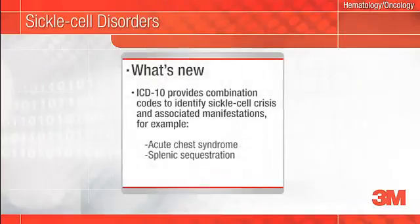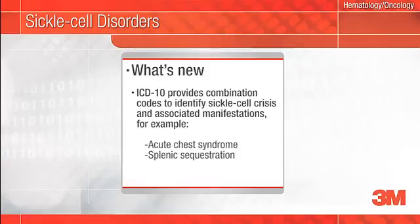ICD-10 provides combination codes that identify the sickle cell disease in crisis and some of the associated manifestations of crisis, specifically acute chest syndrome and splenic sequestration. In ICD-9, two separate codes were required: one to capture the sickle cell crisis and the other to capture the manifestation.